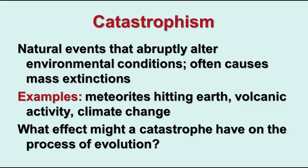Catastrophism is when natural events change environmental conditions abruptly, and oftentimes this results in a mass extinction. Think of the meteorite strike 65 million years ago that eventually took away the dinosaurs — that's an example of catastrophism. There have been a number of mass extinctions in Earth's past, many related to climate change or some kind of catastrophe. Organisms that survive have some adaptation allowing them to continue living, and those left are able to fill habitats now empty because some occupants have become extinct. Often after mass extinctions there is a big bloom of increased speciation as surviving organisms take advantage of now-vacant habitats.